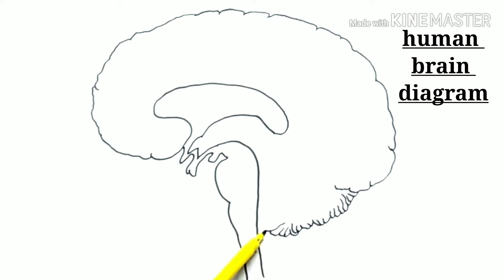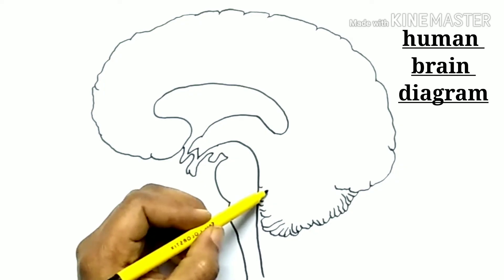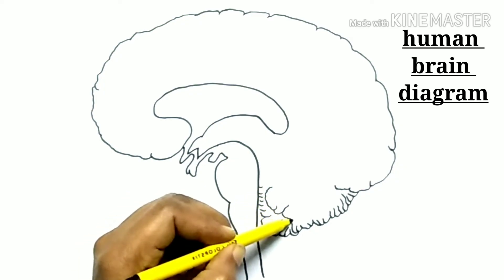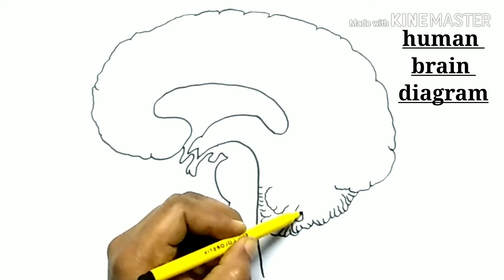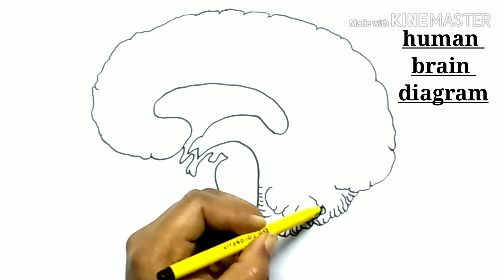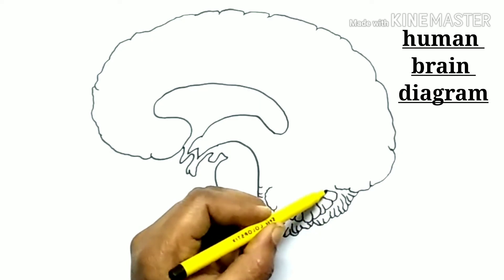Hindbrain: The hindbrain consists of cerebellum, medulla, and pons. It maintains posture and balance of the body, controls body movement, and controls involuntary actions.